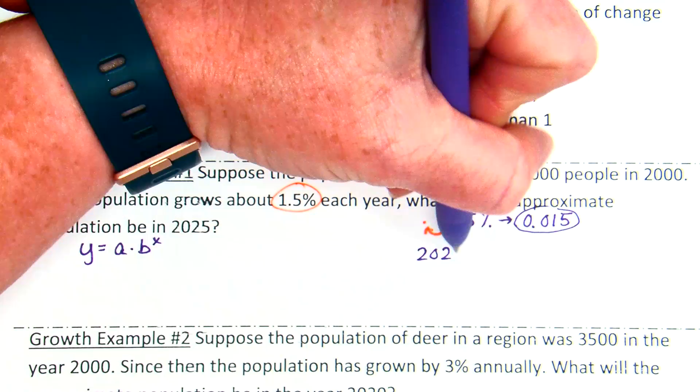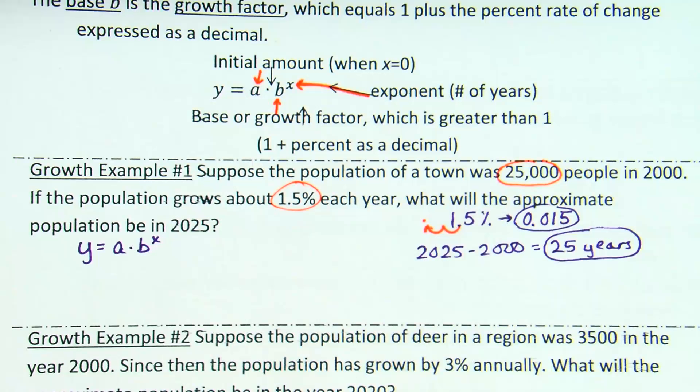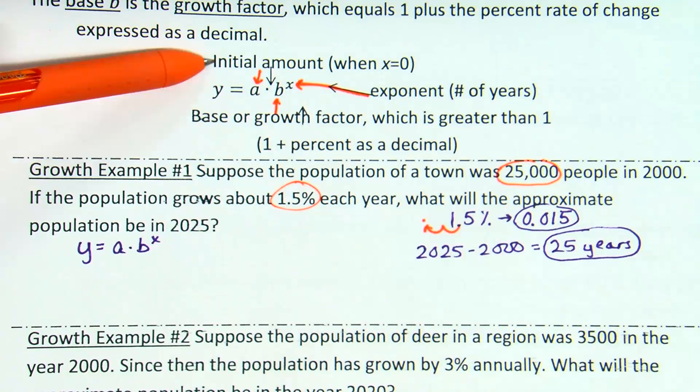And then what's the other information they gave us? Okay, the town population was 25,000. So that is the amount of people at the beginning of this problem. Or in other words, that is the initial amount. And if you look back up here, initial amount goes in place of A. And so this 25,000 is going to be my A value.